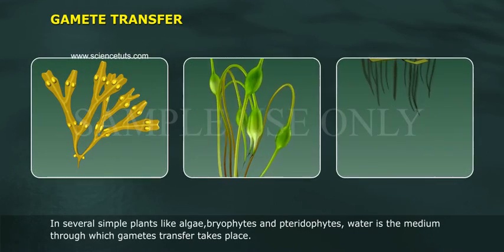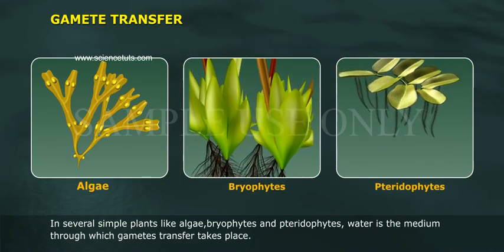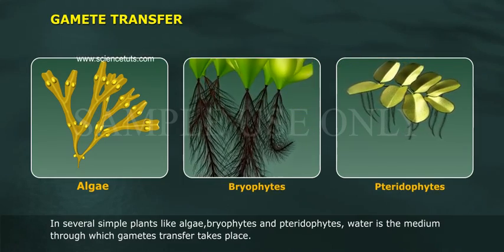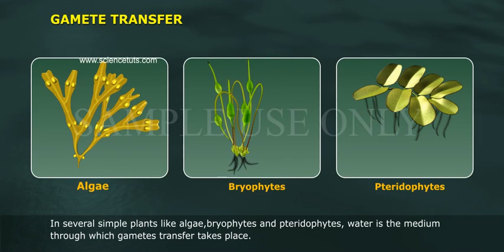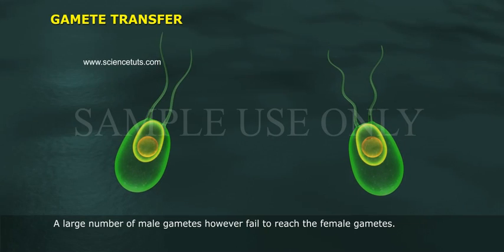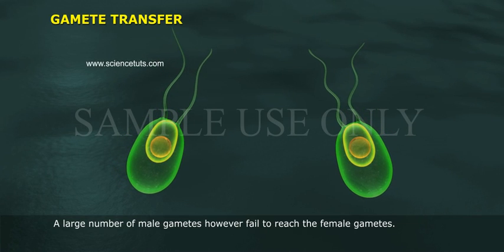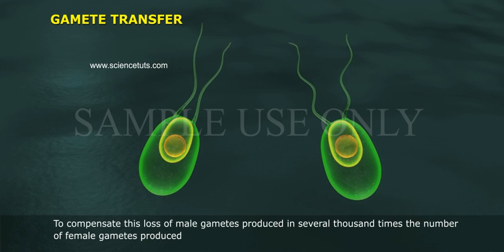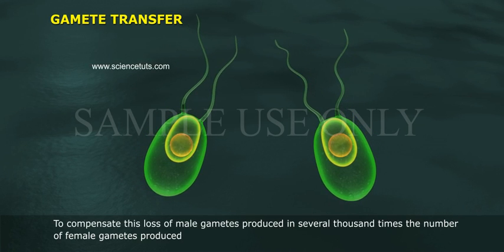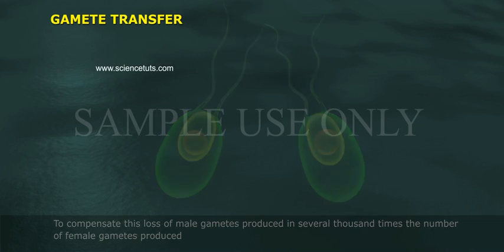In several simple plants like algae, bryophytes, and pteridophytes, water is the medium through which gamete transfer takes place. A large number of male gametes, however, fail to reach the female gametes. To compensate for this loss, male gametes are produced in several thousand times the number of female gametes produced.